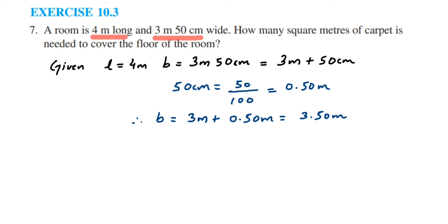Now we got both measurements in meters. We have to find out the area of the room. Area of room equals length times breadth. Length is 4 meters and breadth is 3.50 meters. When you multiply 4 and 3.50, we get 14 square meters.